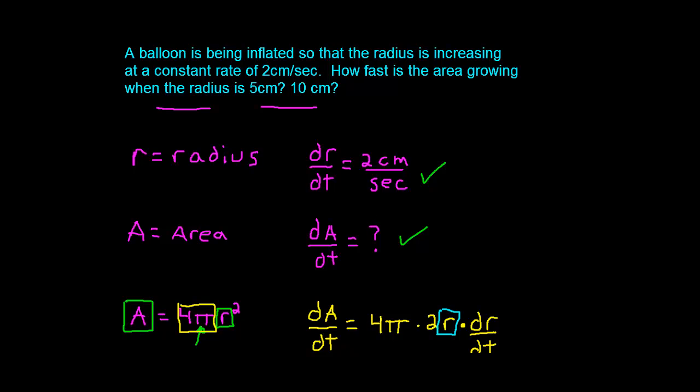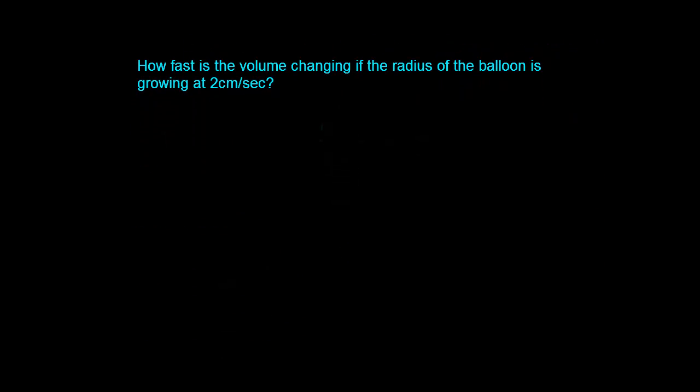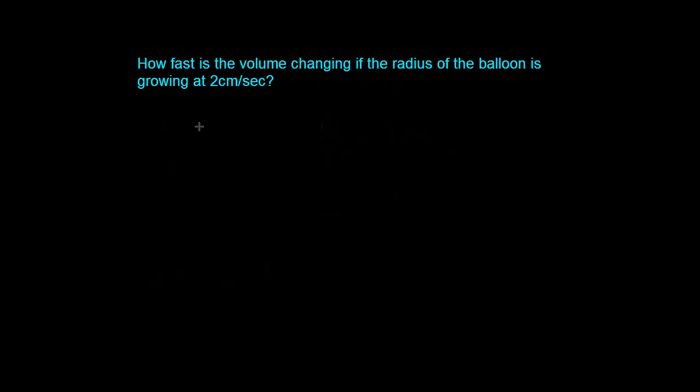I'm going to assume that we have seen this or that we have a general understanding of related rates before we tackle the next part of this problem, which is basically the exact same problem except this time we are interested in what the volume is doing instead. So exact same problem, exact same numbers, just what's the volume doing instead?